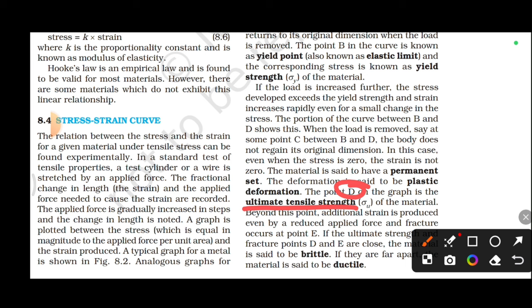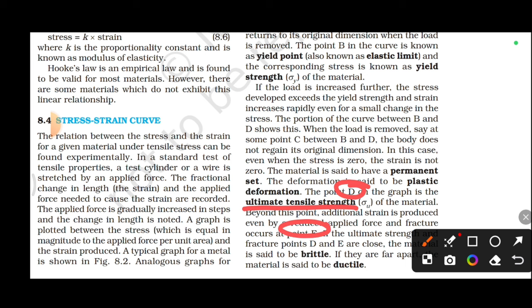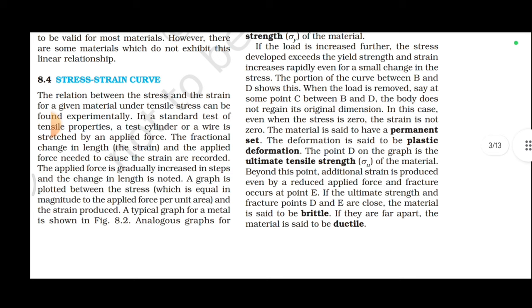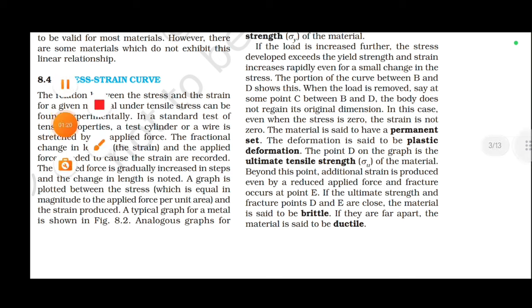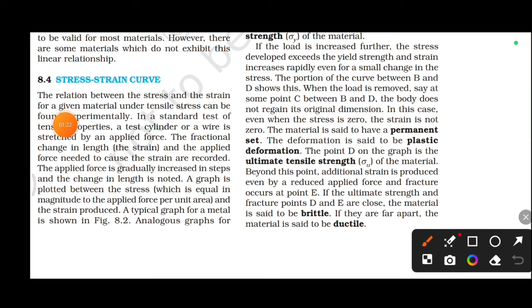The fracture point occurs at E. The material is said to be brittle if points D and E are close together. If they are far apart, the material is said to be ductile.